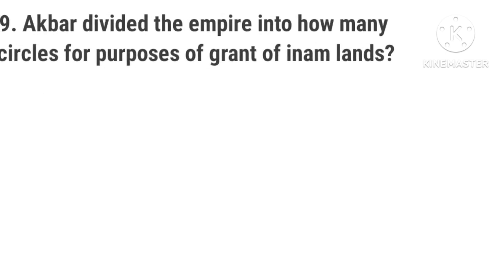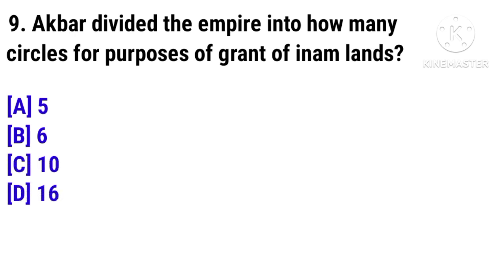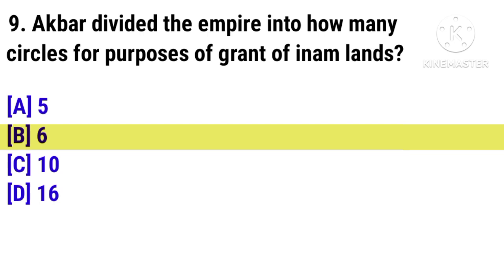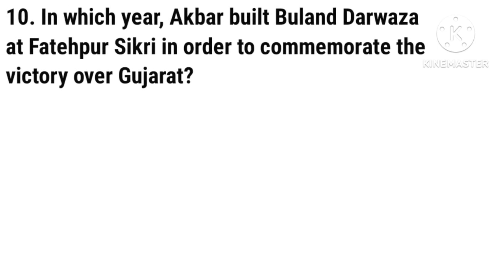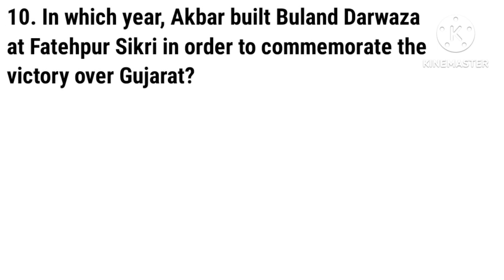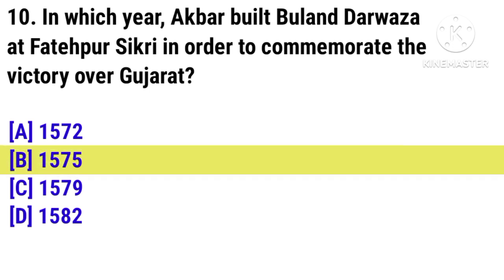Question 9: Akbar divided the empire into how many circles for purposes of grant of Inam lands? The answer is 6. Question 10: In which year did Akbar build Buland Darwaza at Fatehpur Sikri in order to commemorate the victory over Gujarat? The answer is 1575.